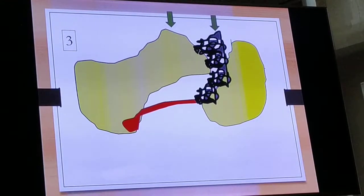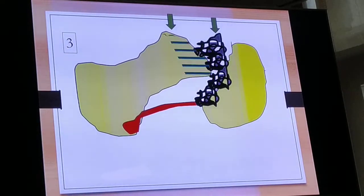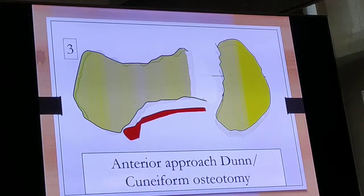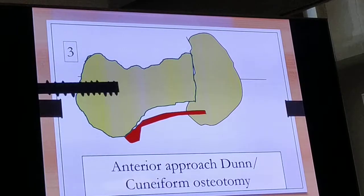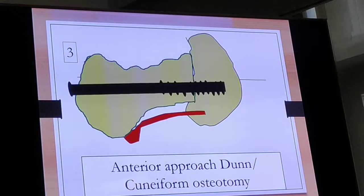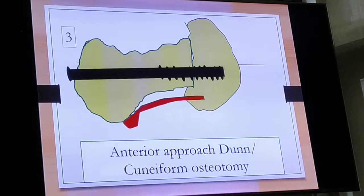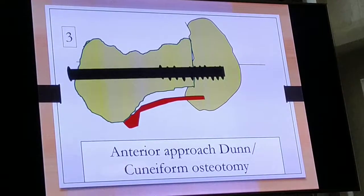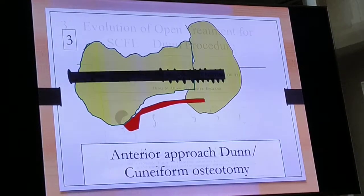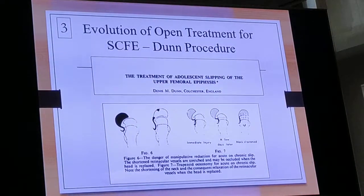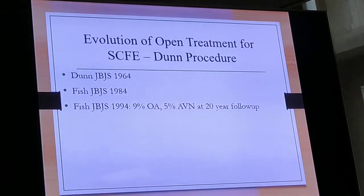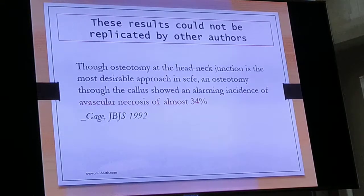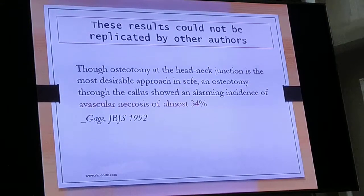The third method is the anterior approach Dunn cuneiform osteotomy, where you go anteriorly, remove the bump and callus, shorten the neck, and fix it with a screw. The problem with this approach is that going anteriorly gives no access to the posterior vasculature, resulting in a high chance of avascular necrosis. First described by Dunn and Fish in the 1960s with a reported low rate of AVN, subsequent authors have found that the rate of AVN with an anterior Dunn osteotomy is actually very high.